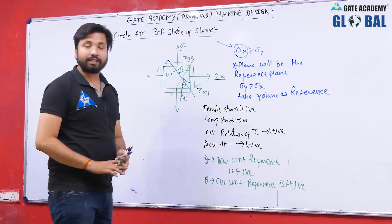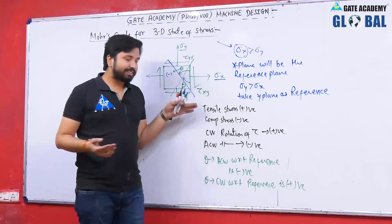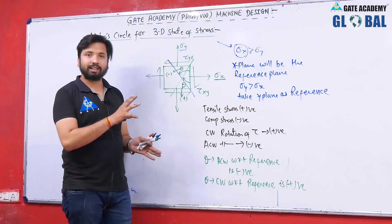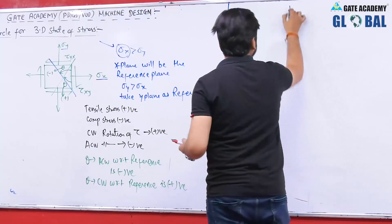This is a simple sign convention, and the same sign convention will be followed in the analytical approach. If you use the formulas discussed in the previous lecture, we follow the same sign conventions — there will be no difference in the outcome between Mohr's circle and the analytical approach. To draw Mohr's circle, we will use simple coordinate geometry.